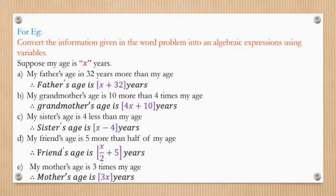My sister's age is 4 less than my age. My age is X. Less means subtraction, so my sister's age is X minus 4 years. My friend's age is 5 more than half of my age. Half of my age is X upon 2. Friend's age is 5 more, means plus 5. So friend's age is X upon 2 plus 5 years. My mother's age is 3 times my age. 3 times means 3X, so mother's age is 3X years.